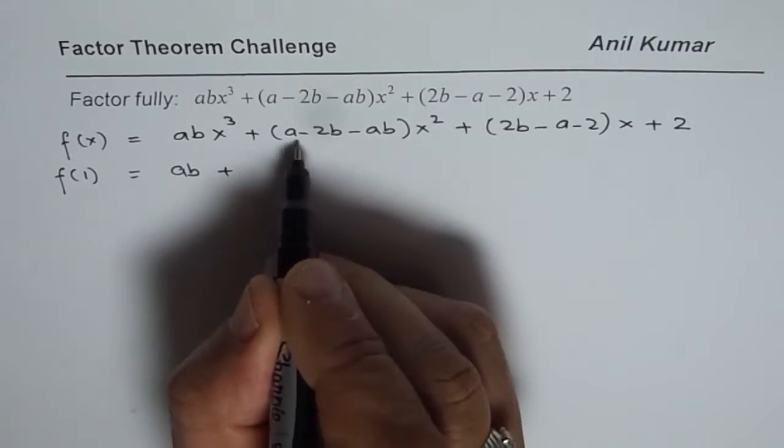Since f(1) = 0, that means (x − 1) is indeed a factor of this expression. What we can do now is perform long division to find the other factor.